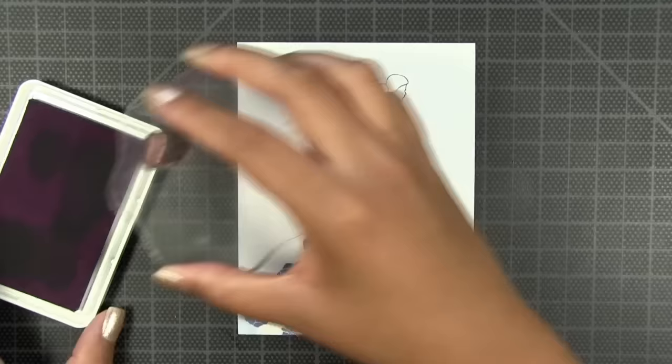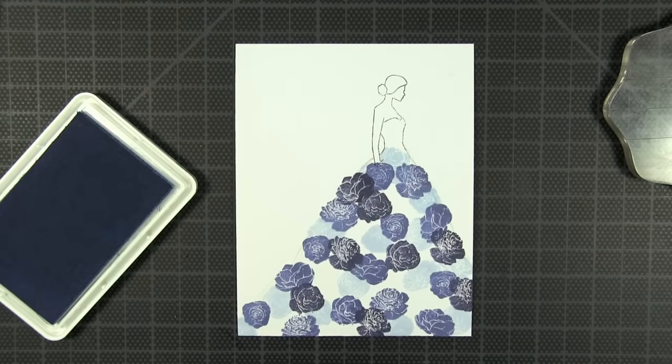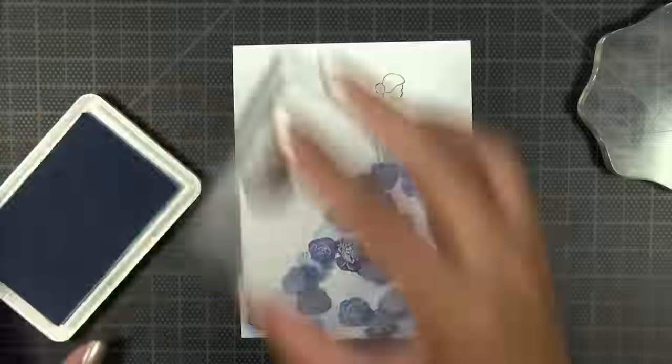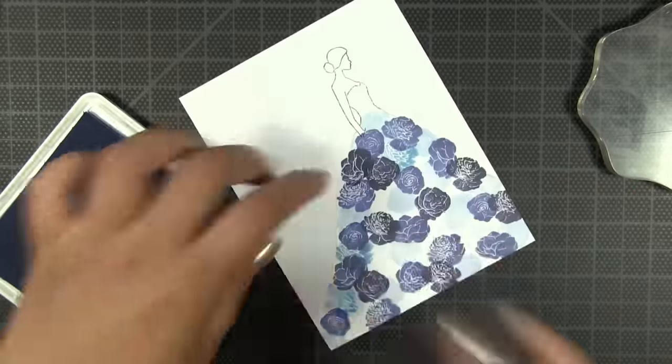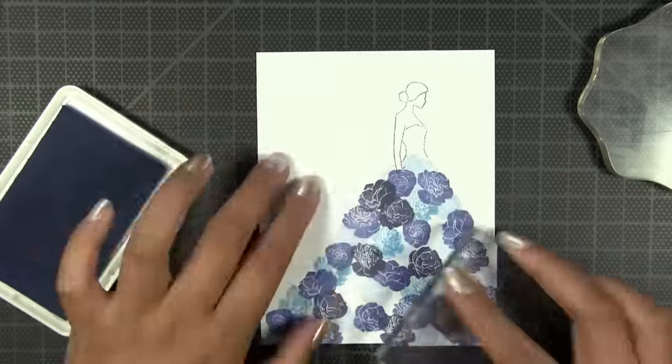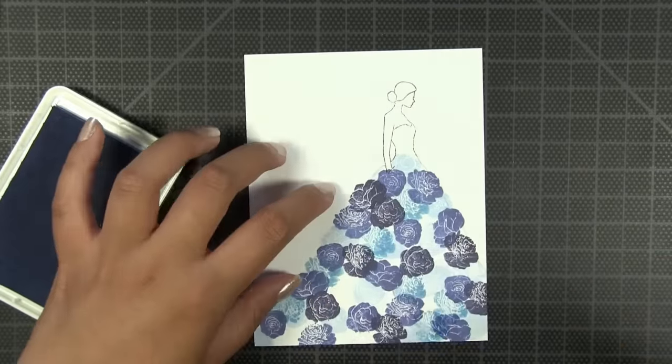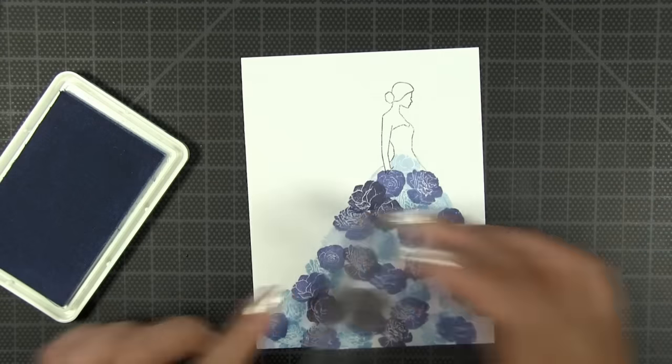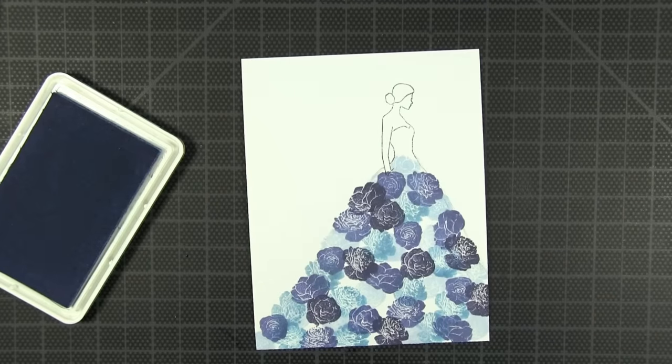Now I've moved on to stamp some more florals in our Italian denim. I'm not going heavy-handed with this at all because it is very dark and I don't want it to overpower the skirt. Those three inks were part of our new dusty blues collection, but now I'm going in with our Cali blue dye ink and filling in all the white spaces in her skirt.